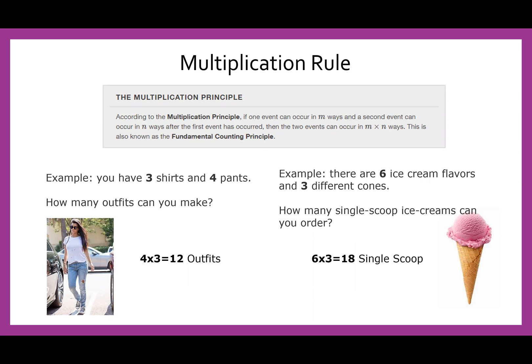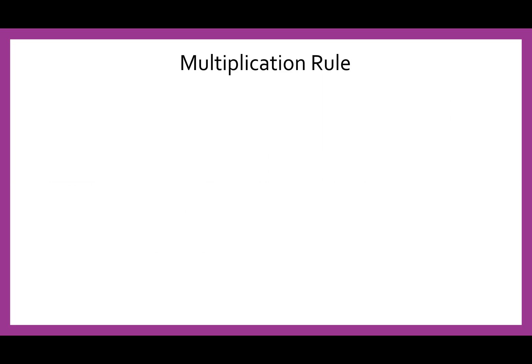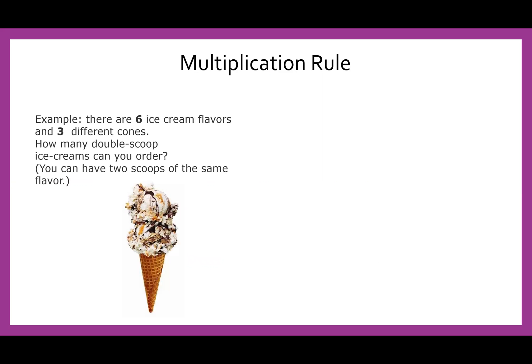And we don't have to limit this to just two events. Let's think more about ice cream. So if we have the same six ice cream flavors and the same three different cones, but now we want a double scoop and we can have two scoops of the same ice cream, then the way that we can determine how many possible combinations there are is going to be six times six times three. So that first six is the first scoop. The second six is the second scoop. And because I can have repeat flavors, I'm not limiting myself on the second scoop. So I get 108 total choices.